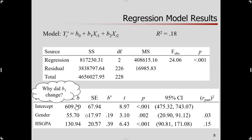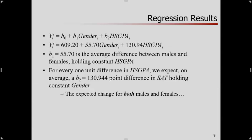We'll look at this issue visually later on. The first slope for gender is 55.70 — that's the average difference between males and females holding constant high school GPA. So for males and females who are the same on high school GPA, that's their SAT difference just due to being male or female, according to our model. The slope for high school GPA is 130.94, meaning for a one-unit difference in high school GPA, on average we'd expect a 130.94-point difference in SAT, holding constant gender — and this applies to both males and females.